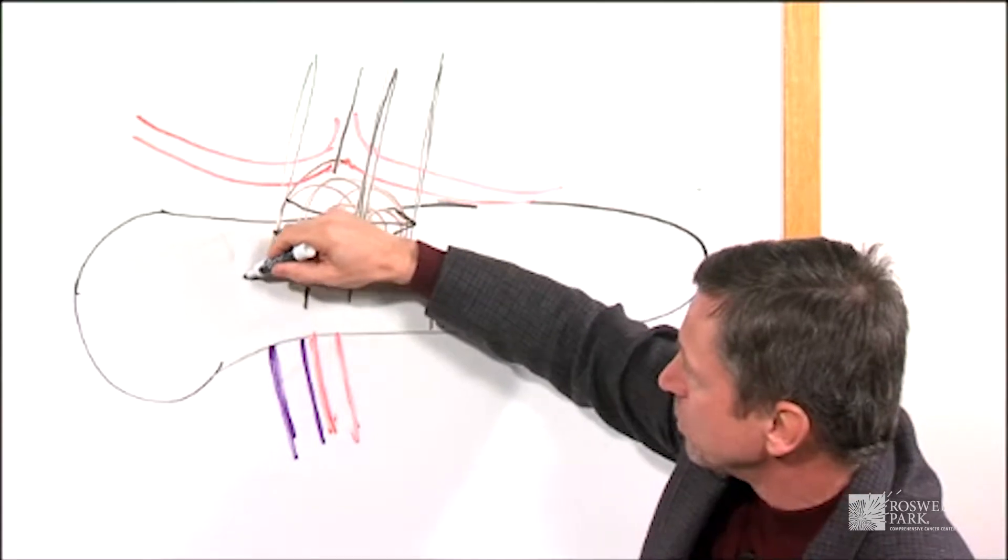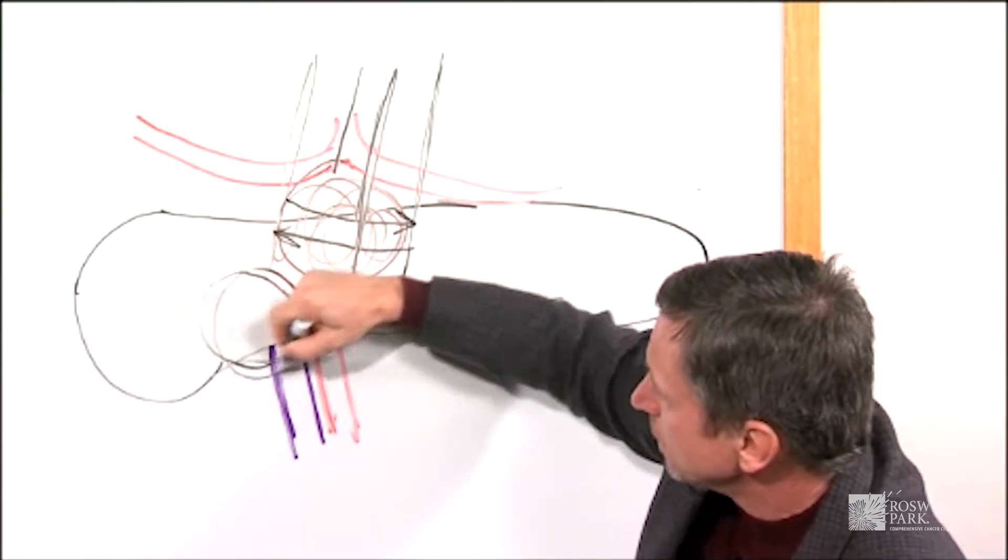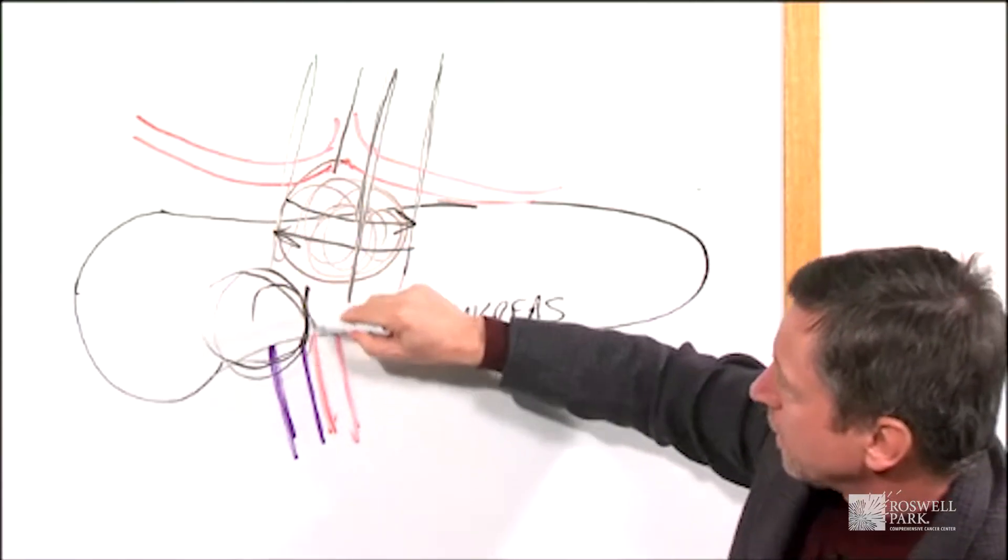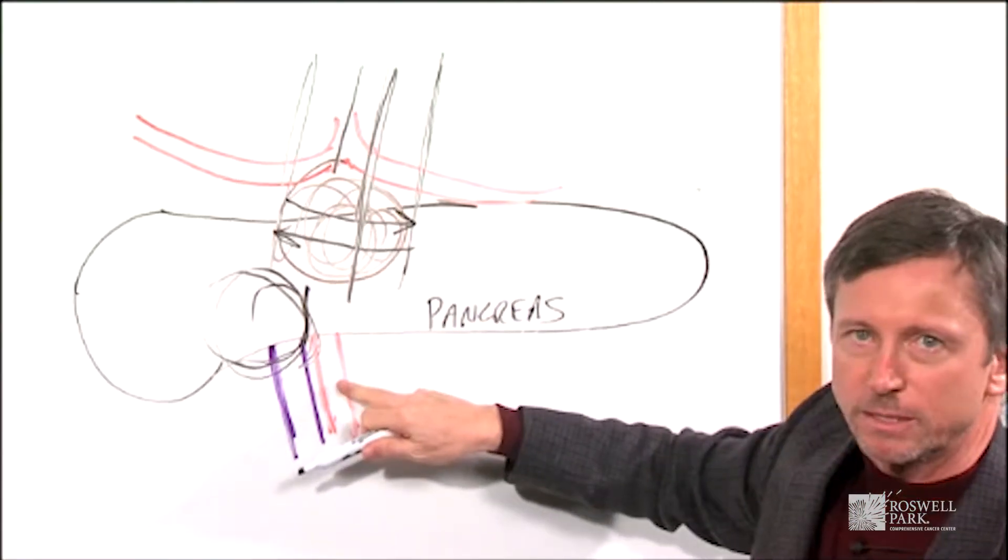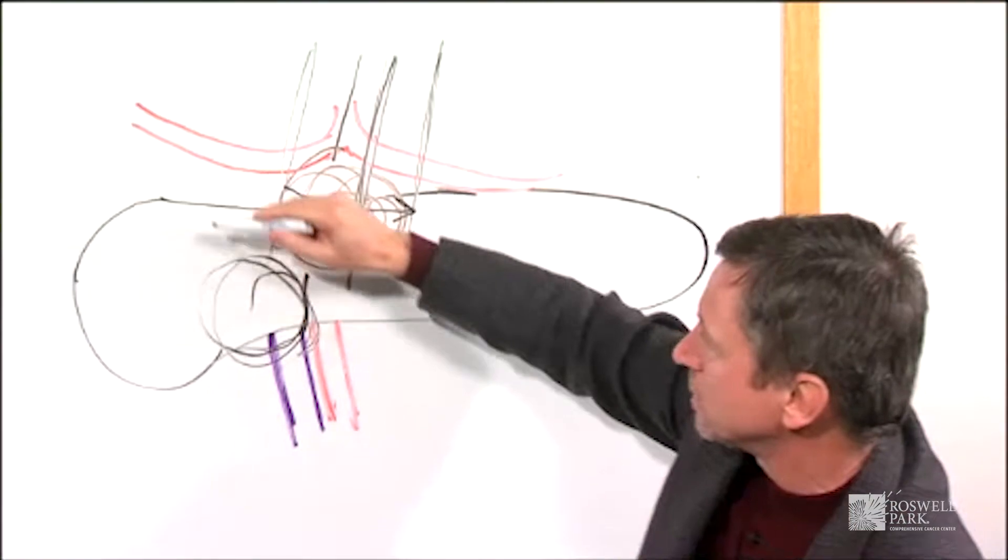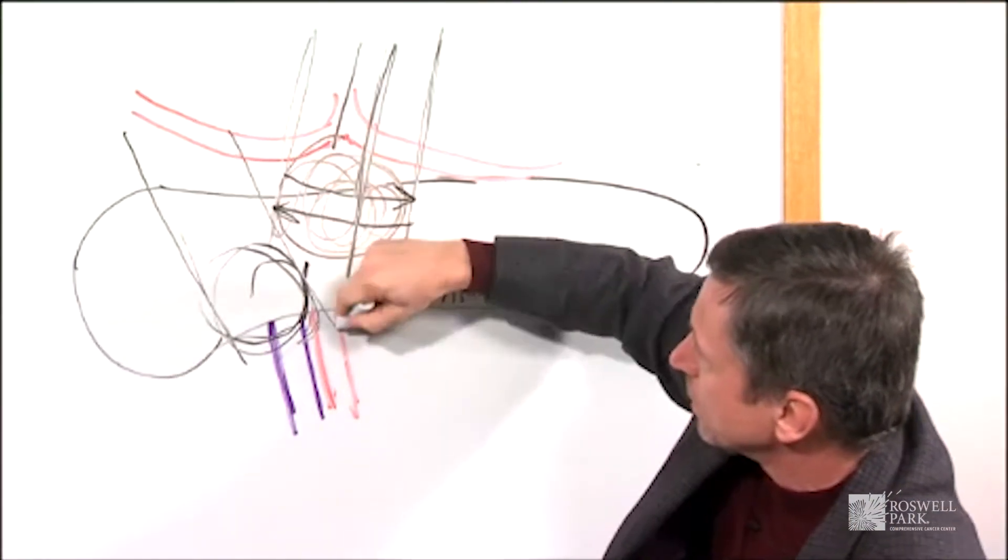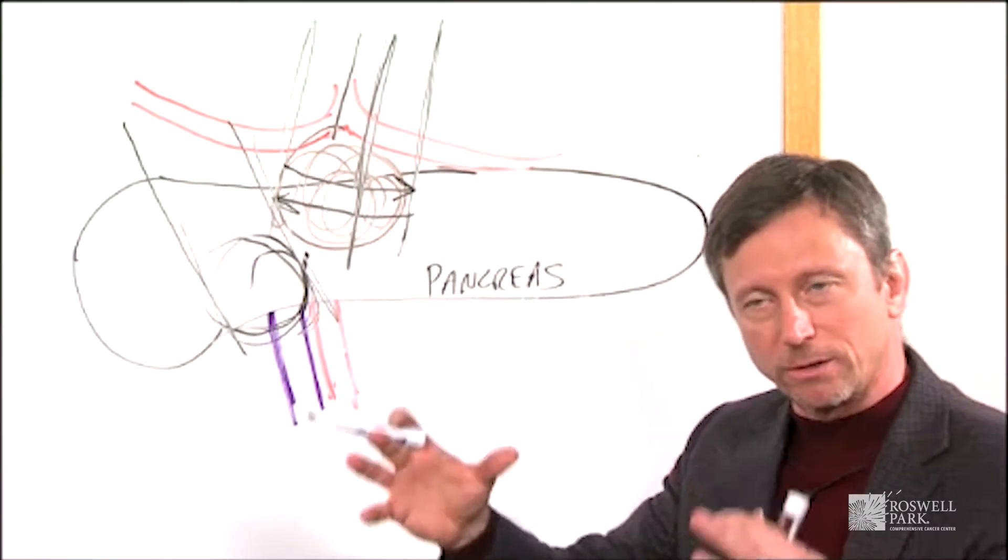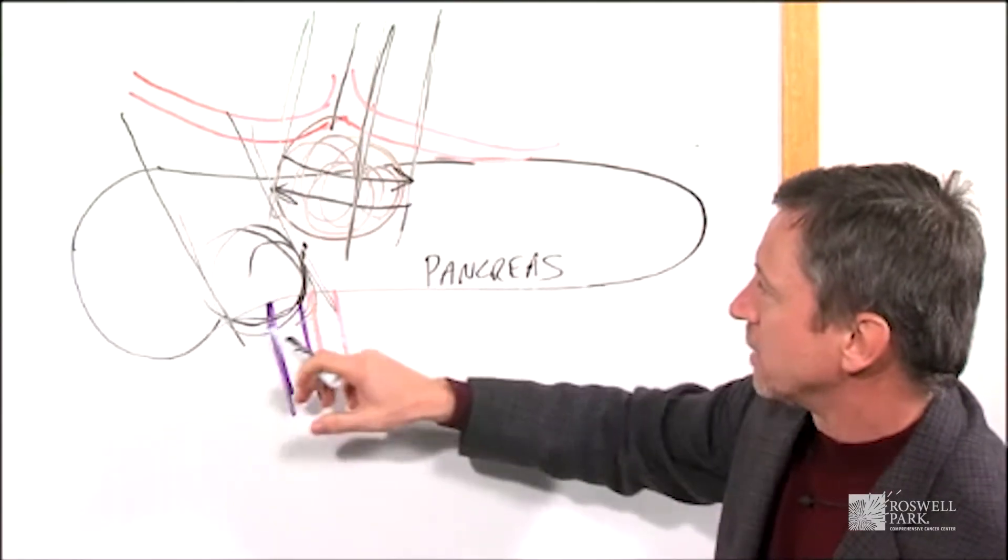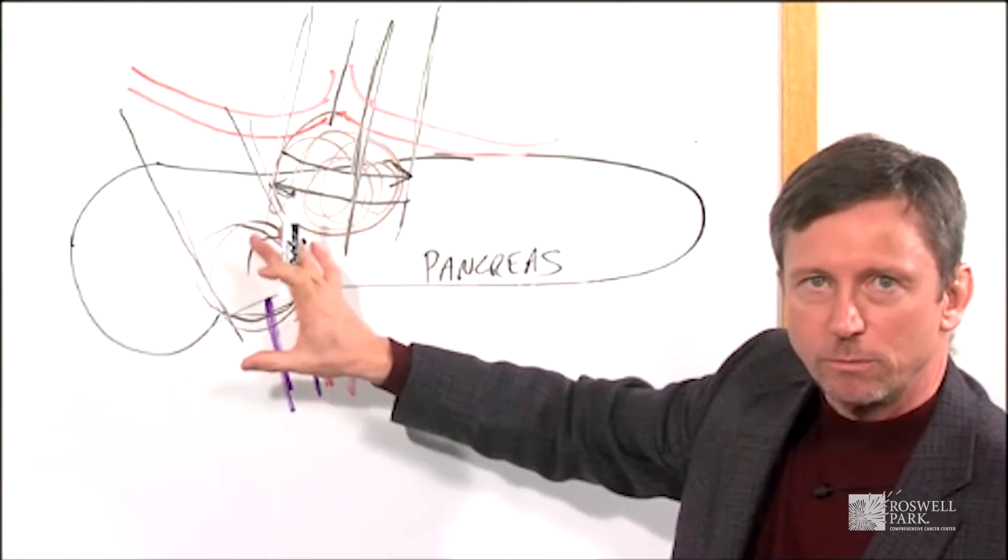There may be another situation where you have a tumor in this location that's involving or wrapping around this artery here. This is called the superior mesenteric artery, but the same concept could apply. You bracket the tumor with these probes, apply the electrical energy through the NanoKnife generator, and you can actually kill the tumor in place.